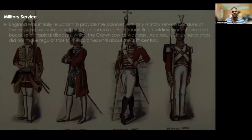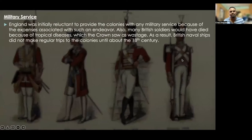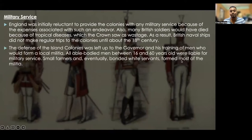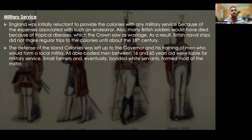England was initially reluctant to provide the colonies with any military service because of the expenses involved. Also, many British soldiers would have died from tropical diseases, which the crown saw as a huge wastage of manpower. As a result, British naval ships did not make regular trips to the colonies until about the 18th century. The defense of the island colonies was left up to the governor and his training of men who would form a local militia. All able-bodied men between 16 and 60 years old were liable for military service. Small farmers and bonded white servants formed most of the militia.